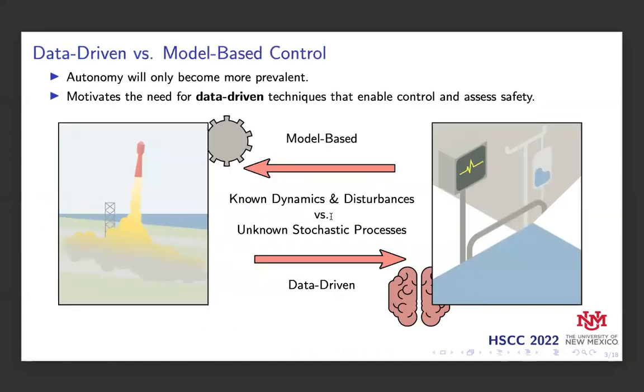As autonomy becomes more prevalent, we need tools which are capable of handling uncertain systems that are data-driven and that enable control and can assess safety. Model-based control, which is useful when we have known dynamics and disturbances, often fails when faced with real-world autonomy, partly because the system or disturbance becomes difficult or even impossible to model. On the other hand, when we have data-driven scenarios, we're often dealing with unknown stochastic processes, and we need to use data to synthesize controllers.